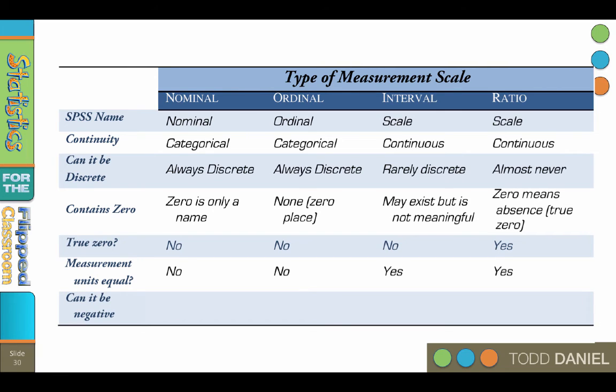In nominal and ordinal scales, the measurement units are not equal. The difference between first place and second place is not the same as the difference between fourth place and fifth place. On the other hand, interval and ratio measurement units are equal because they have a consistent underlying interval. The difference between one dollar and two dollars is the same as the difference between four dollars and five dollars. Can the scale have negative values? I've never seen negative numbers used on a nominal scale, although theoretically it would be possible. Ask your football coach if you can be negative 23. Ordinal scales cannot have negative values because they cannot have the zero place. Interval scales can have negative values such as 25 degrees below zero, but it's not common. Ratio data has an absolute zero, so it cannot have negative numbers.